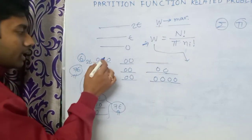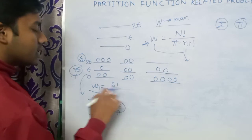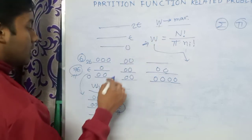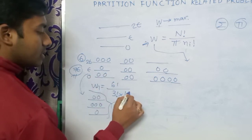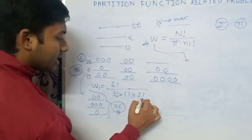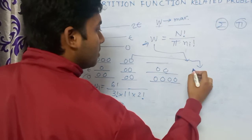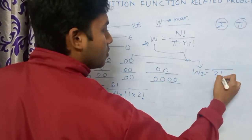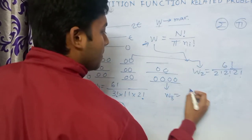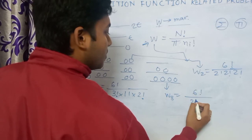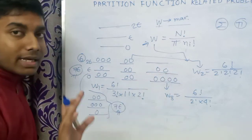For configuration one, W₁ = 6! / (3! × 1! × 2!). For configuration two, W₂ = 6! / (2! × 2! × 2!). For configuration three, W₃ = 6! / (2! × 4!). Now comparing W₁, W₂, and W₃, the denominator of W₂ is always smaller than the others.